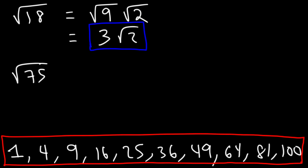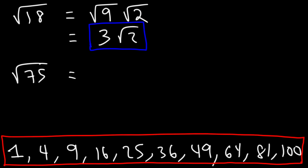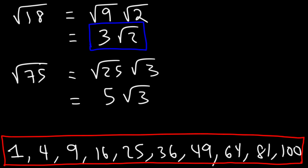Now let's do the same for the square root of 75. What is the highest perfect square that goes into 75? 25 goes into 75: 75 divided by 25 is 3, so we write 75 as 25 times 3. The square root of 25 is 5, so the square root of 75 simplifies to 5√3.